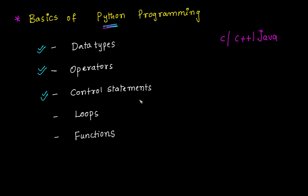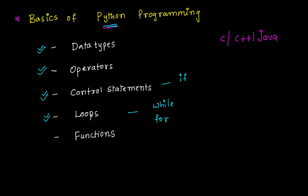Then we should learn the concept called control statements — if, if-else, and nested if-else. After that, we should focus on loops. In Python, we have two loops: while loop and for loop. You can expect some tricky questions from this topic, just like in GATE Computer Science.